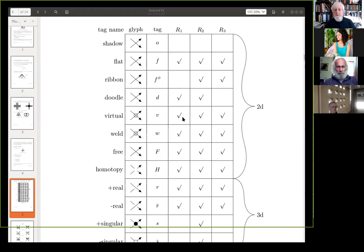So, a rotational virtual virtual crossing, yeah, would just remove the R1 check. Remove that tick. Okay, that's interesting. Yeah. That's interesting. Okay. And now we go down to welds, and Colin would call this an unframed weld, okay, because it satisfies R1. And there are various other things.